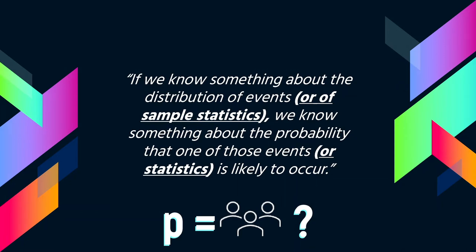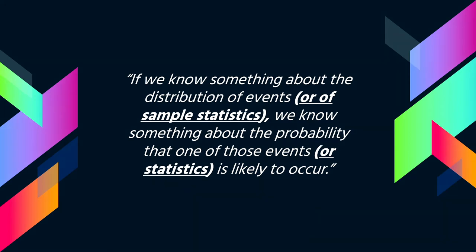If I get a group of 15 people and find they have an average of 74 on a test, I want to ask: what's the probability that 15 students would score 74 on average? What I'm concerned with here is the performance of a group, a sample, not of an individual. This sets the foundation for the inferential testing we'll start talking about this week.